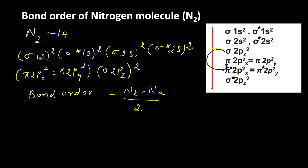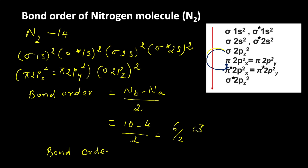Counting the bonding electrons: sigma 1s² gives 2, then 4, 6, 8, 10 — so there are 10 bonding electrons in the nitrogen molecule. For antibonding electrons: sigma star 1s² and sigma star 2s² gives 2 plus 2 equals 4. So bond order equals (10 minus 4) divided by 2, which is 6 divided by 2, equal to 3. The bond order of nitrogen molecule is 3.